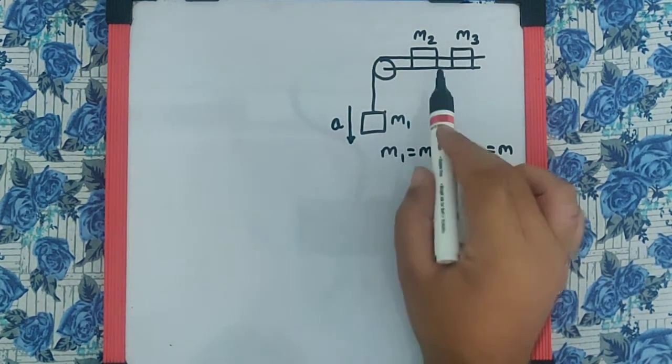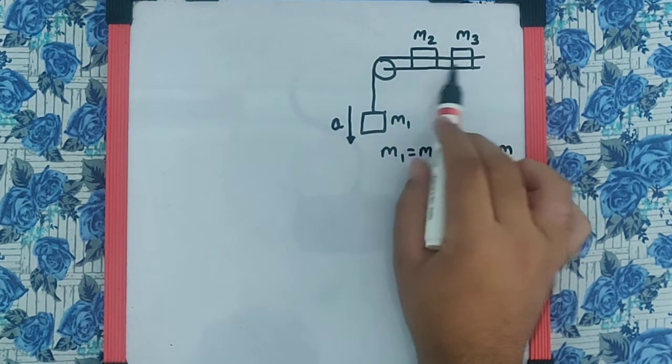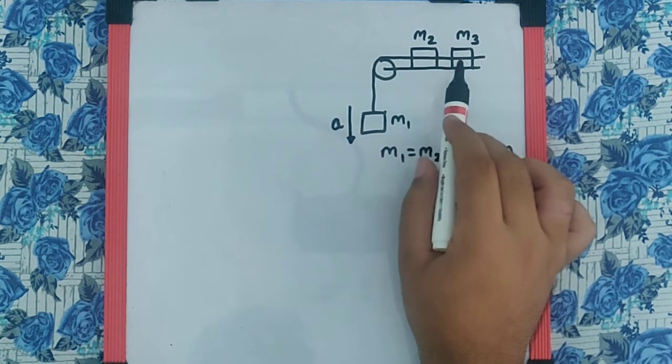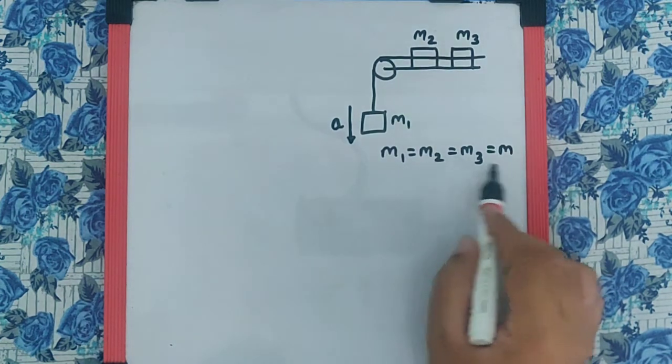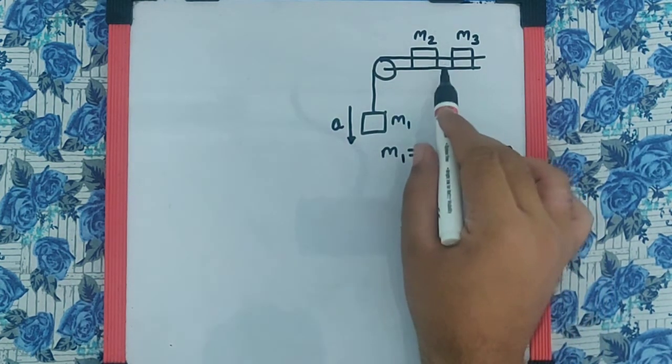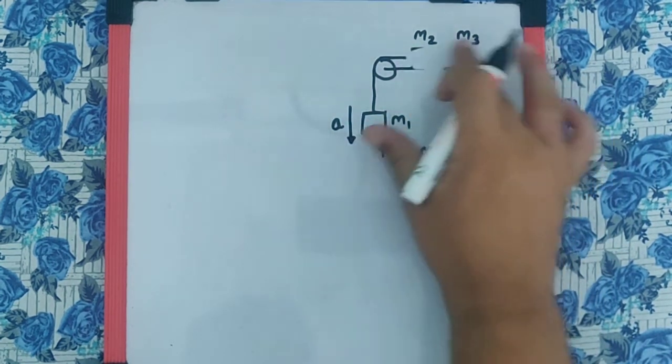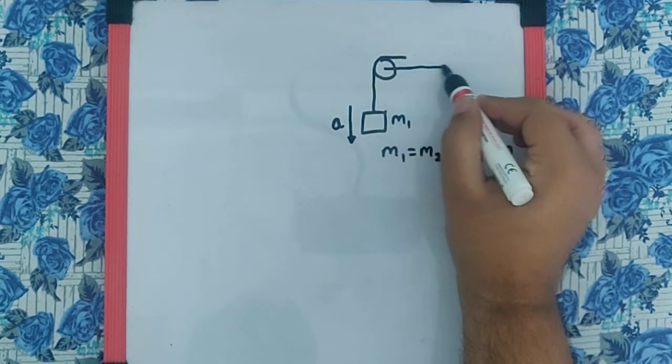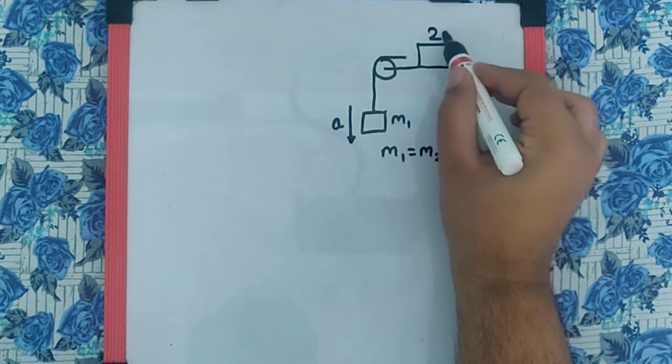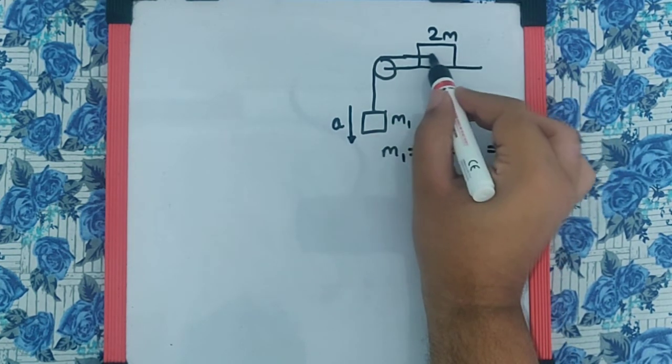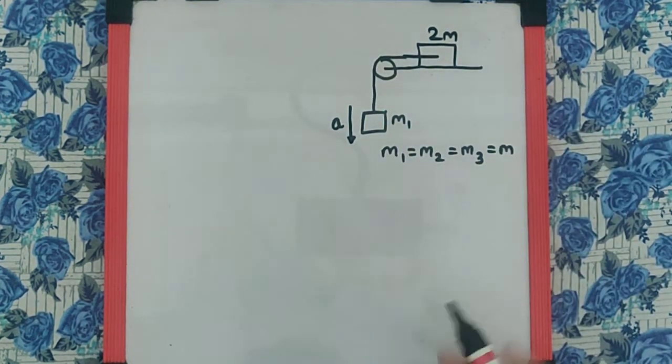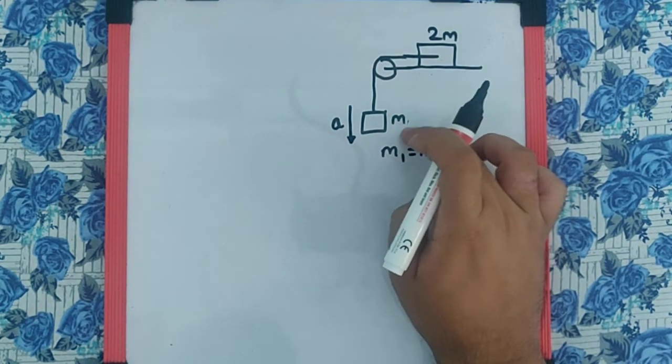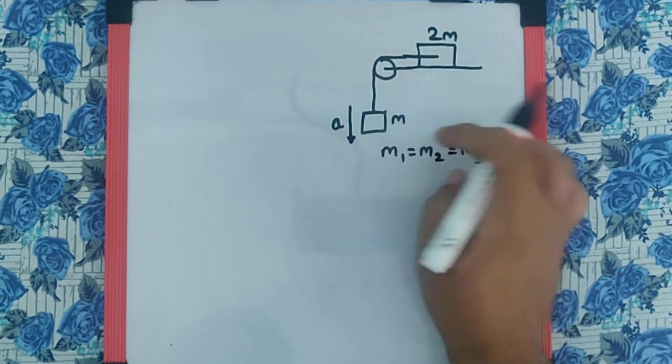First of all, since there is nothing to be found individually for mass M2 and M3, and both masses are equal as M, we can redraw this diagram as one common body of mass 2M having the wire attached. And instead of writing this as M1, we would write this as M.